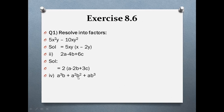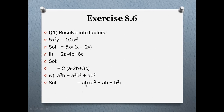For the fourth part: a³b + a²b + ab³. Check variable a: it appears 3 times, 2 times, and 1 time respectively, so take a common once. Similarly, b appears 1, 2, and 3 times — minimum once — so take b common. Take ab common: ab(a² + a + b²). When you take ab common, 2 times of a is left in the first term, 1 time in the second, and 2 times of b in the third.